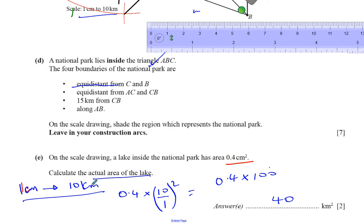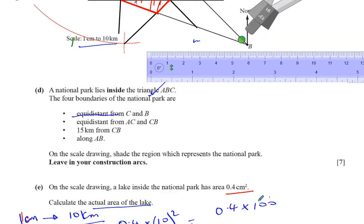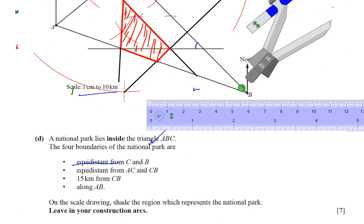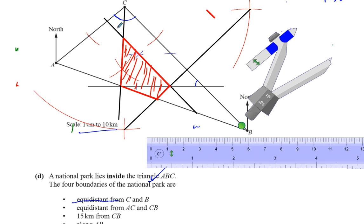That's a much simpler way than making it into 1 to 1 million, squaring that, and then dividing. So our answer is 40 square kilometers. The most involved part of this question was constructing the line parallel to CB by replicating the same angle at the new point. There are different ways to do it, but that's one method. Thank you for watching.